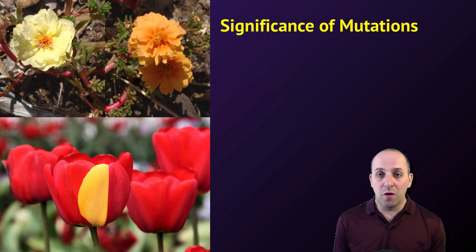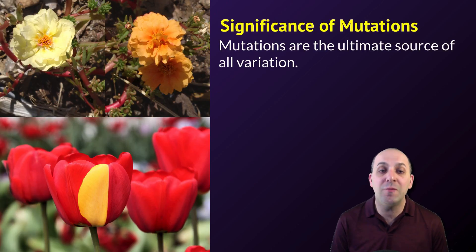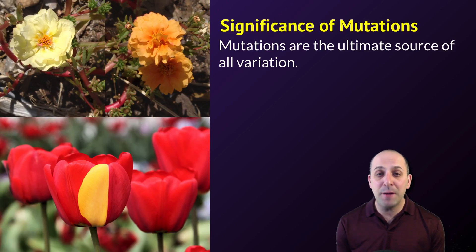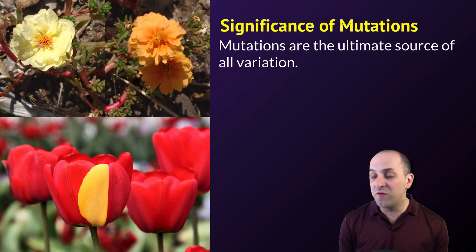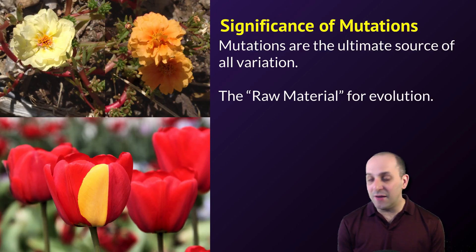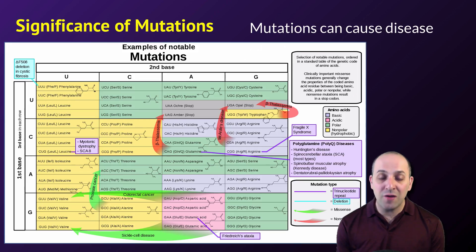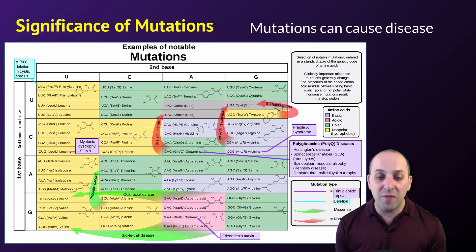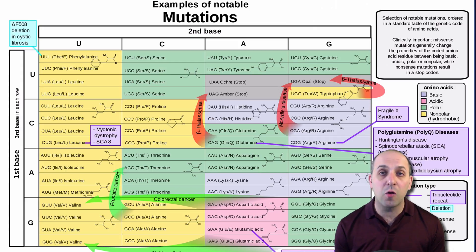So there are a lot of different ways that mutations can occur. I can't stress enough that mutations are the ultimate source of all of the variation that we see in living things. The different colors in these flowers are the result of mutations. The differences we see in different people are ultimately the result of mutations, and in that way we can think about mutations as the raw material for evolution. Of course we normally think about mutations negatively, and it's certainly true that mutations can cause diseases, as this chart of common mutation-related diseases in humans shows.